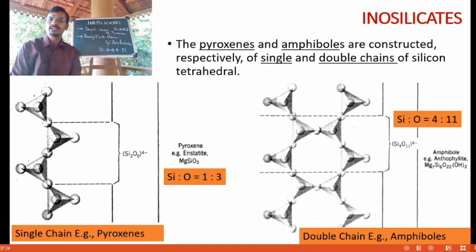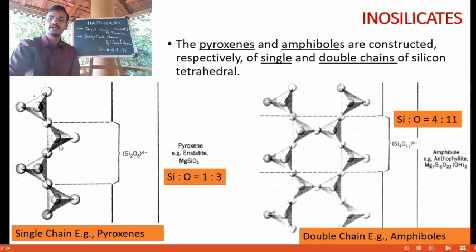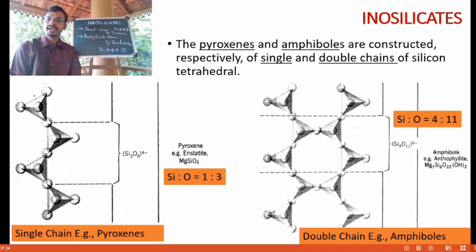In single chain silicates, two oxygen anions per tetrahedra are shared as shown in the figure, giving a Si to O ratio of 1 to 3. The cations — Si4+ and sometimes Al3+ — occupy the tetrahedral sites and share with oxygen in a ratio of 1 to 3 or 2 to 6. If you take two SiO4 tetrahedra as a unit as shown in the figure, the structural formula becomes Si2O6 with a valence charge of minus 4. Pyroxene is a single chain silicate; the mineral enstatite, having a composition MgSiO3, is an example.